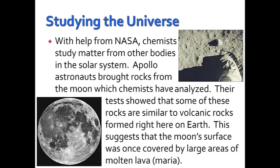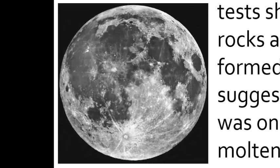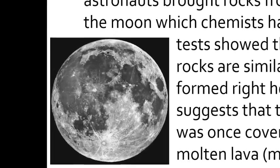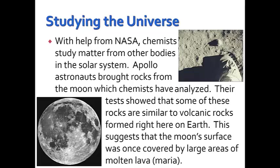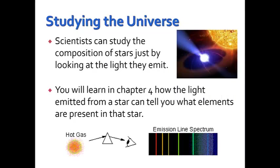Our last topic is how chemists help us study the universe. With help from NASA, chemists study matter from other bodies in the solar system. Apollo astronauts brought rocks from the moon, which chemists have analyzed. Their tests show that some of these rocks are similar to volcanic rocks formed on Earth, suggesting the moon's surface was once covered by large areas of molten lava known as maria — meaning seas — because large black areas of the moon's surface look almost like oceans. Scientists can also study the composition of stars just by looking at the light those stars emit. In Chapter 4 you'll learn how the light emitted from a star can tell you what elements are present in that star.